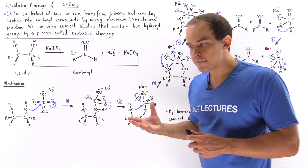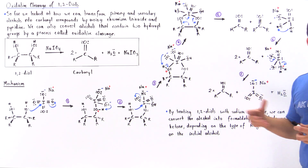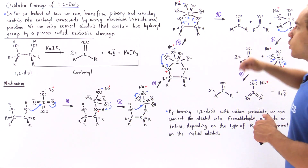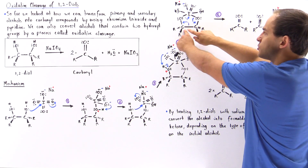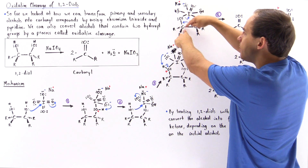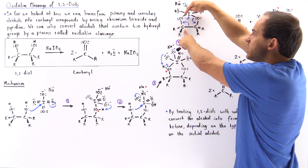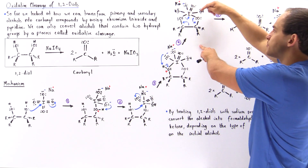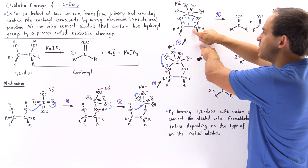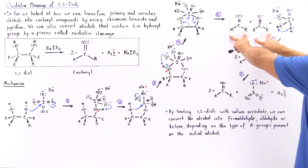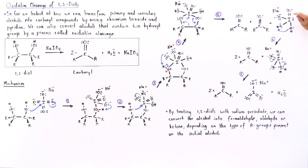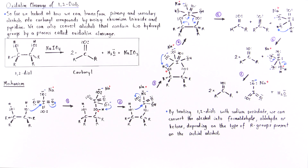In step five, two carbonyl molecules are formed as the bonds rearrange. The covalent bond between the two carbons breaks, forming a pi bond between one carbon and its oxygen, which displaces electrons onto the iodide, which in turn forms a pi bond between the second carbon and its oxygen. We form two carbonyl compounds plus an iodide-containing byproduct with a sodium counterion.